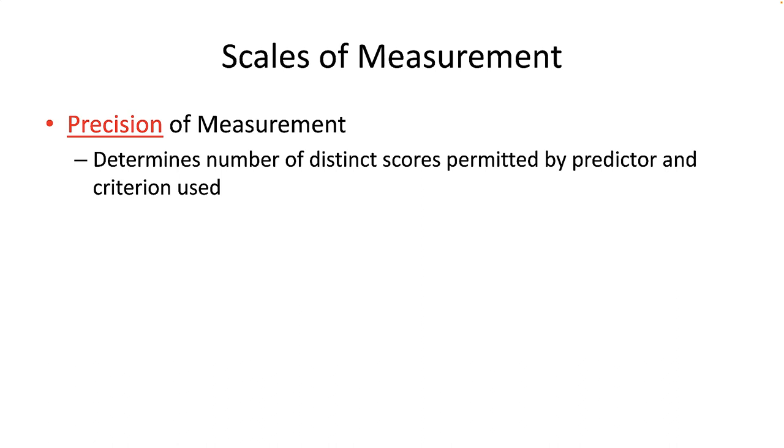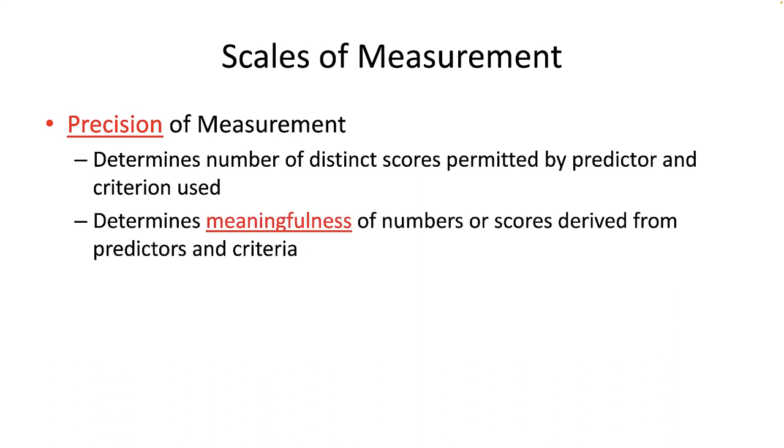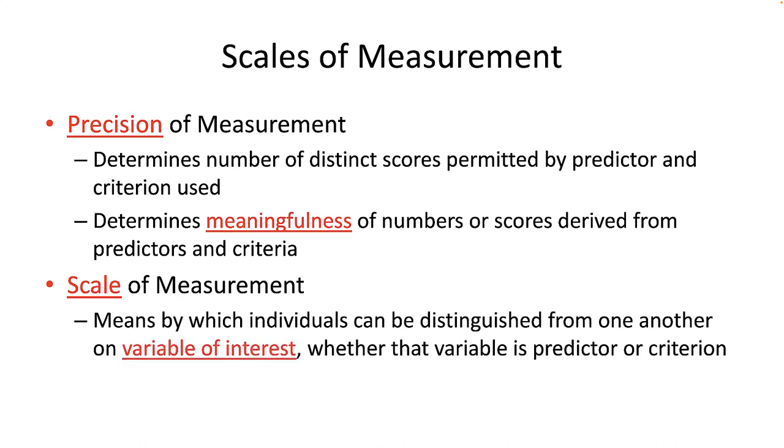Precision should allow for a multitude of distinct scores, like 193 centimeters or 190 centimeters or 164 centimeters. Precision allows one to determine the meaningfulness of the numbers or scores. Tall or short is not meaningful. 6 feet 4 inches is meaningful. The actual scale of measurement is a means by which individuals can be distinguished from one another on a variable of interest, whether that variable is a predictor or a criterion.